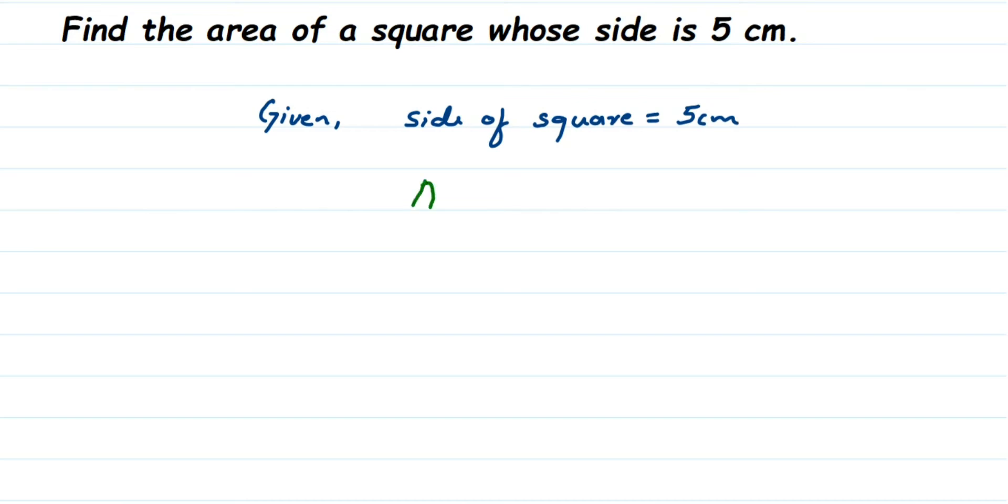So area of square formula is side into side or side square. So area of square is equal to side whole square or you can write side into side.